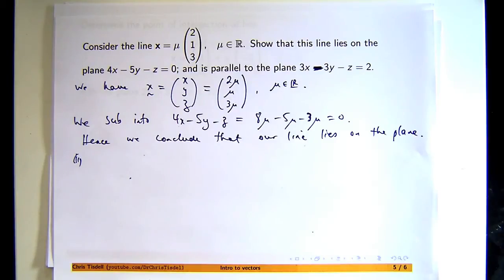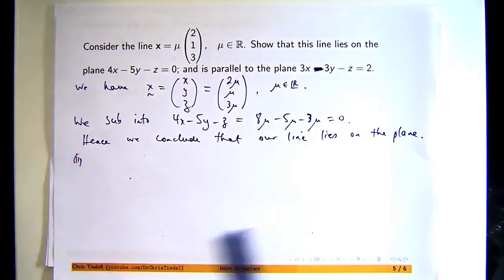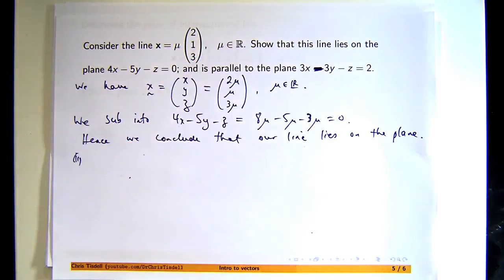You may be able to do this a number of ways. What I'm going to do is transform this plane, this Cartesian form, into a parametric form. Because if you have a parametric form, you know two vectors that are parallel to the plane, and then you can compare them with a vector associated with the line.